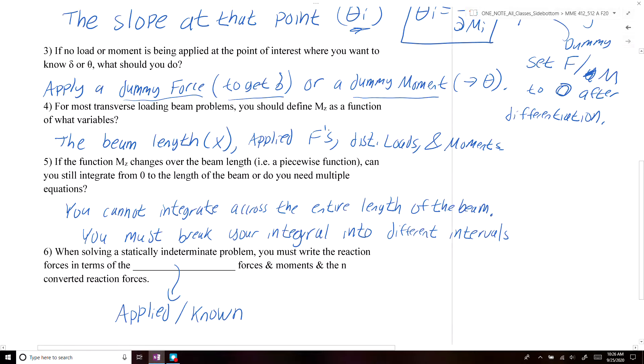Question five says, if the function Mz of x changes over the beam length, so meaning it's a piecewise function, can you still integrate from zero to the length of the beam or do multiple equations? Hopefully this is obvious, but the piecewise function means that the function changes as a function of x and therefore a single function would not be valid across the whole length of the beam. So you have to break up your integral into sections depending on how long the moment function is applied across. If it's only valid from zero to half the length of the beam, you have to do your integral from zero to half of the length of the beam and then use another integral to get from length over two to the length.